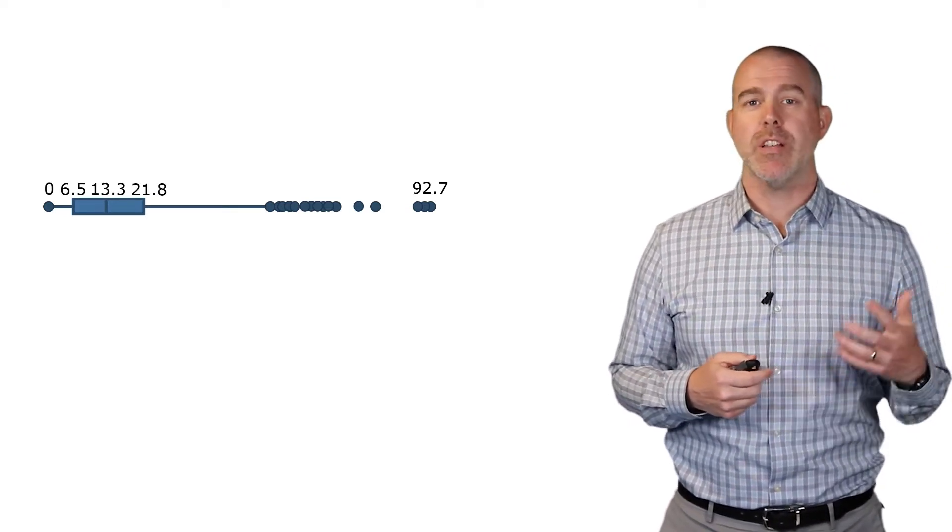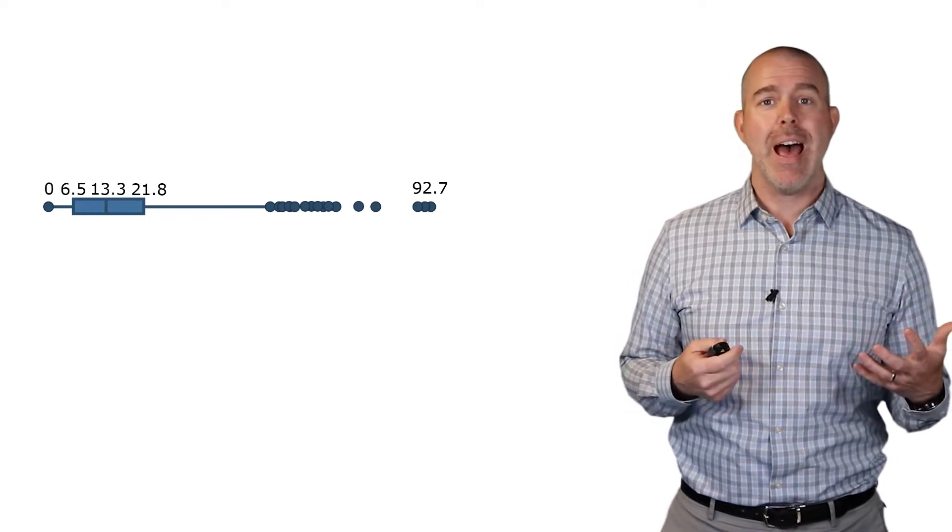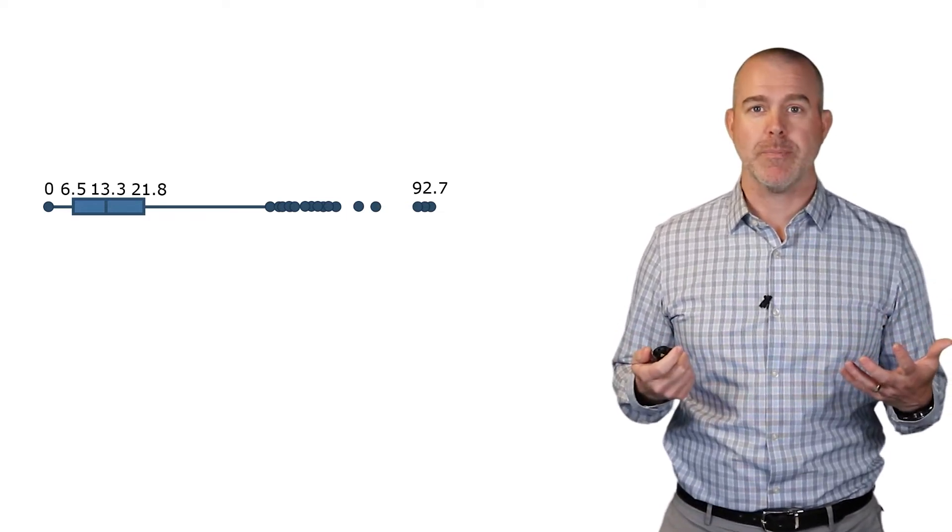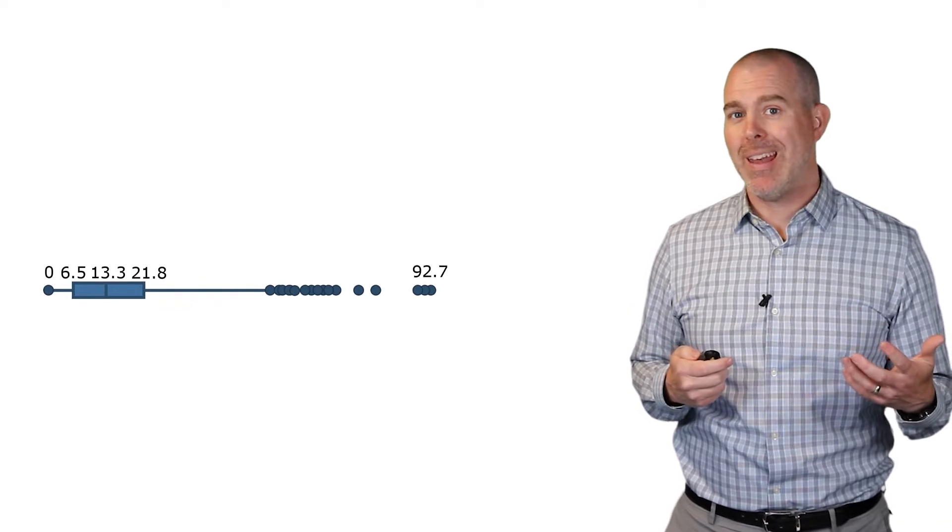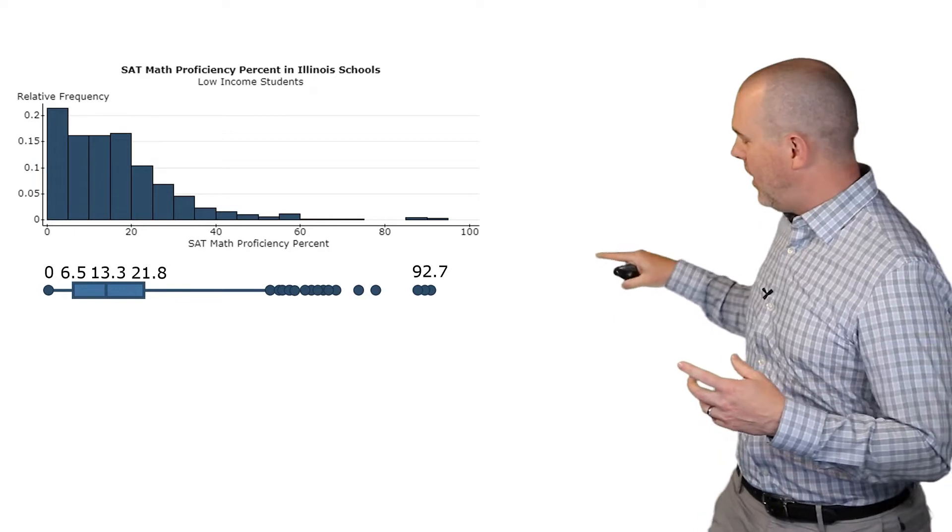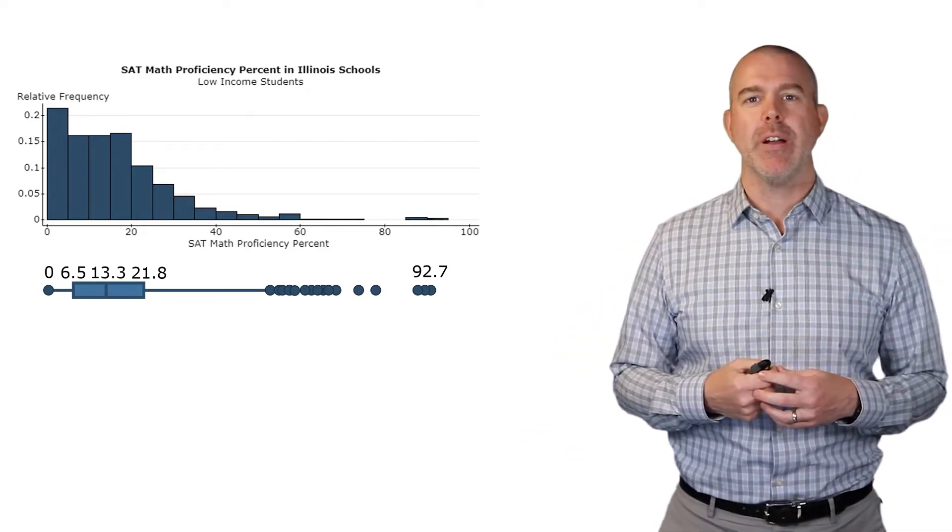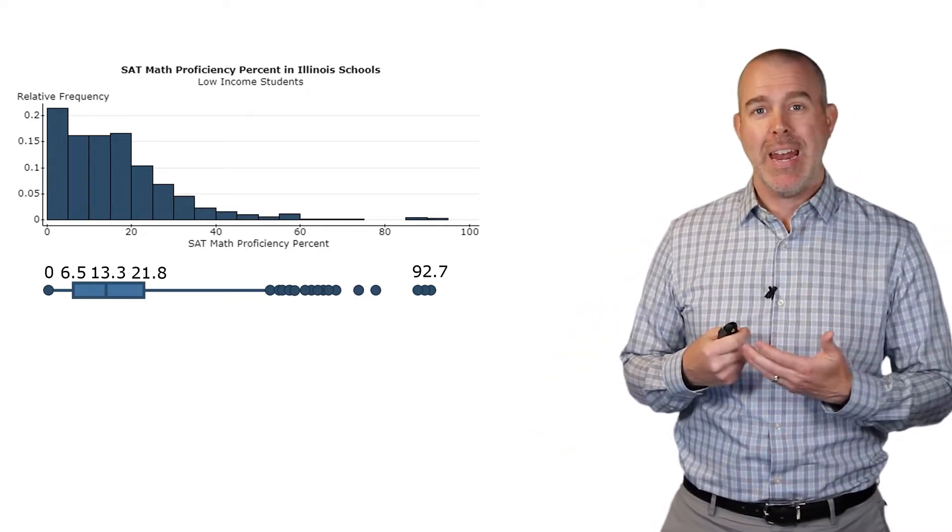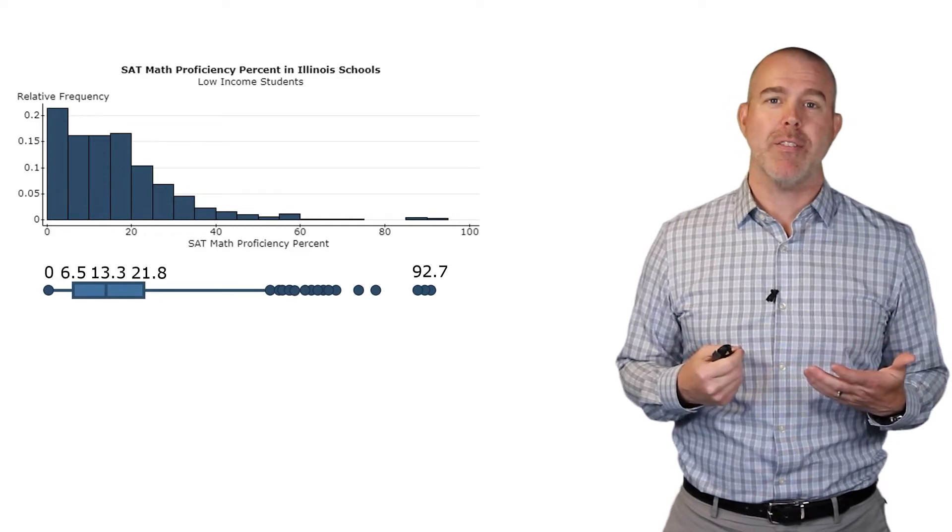We'll see in StatCrunch there's an option to show outliers or not, depending on your purposes. Let's bring back that histogram again. You can see the relationship with the histogram, the bulk of them over on the left, and then you have these outliers over here on the right. And now they're indicated as being separate from the rest of the box plot.